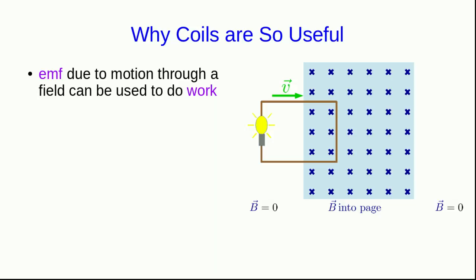Think about our moving loop one more time as it enters the region of B field. If it had a light bulb in it, then that light bulb would light up. We can use the EMF due to the motion of the loop through the B field to do work. And so it's just like the battery in another loop doing work to light up a bulb in the loop.